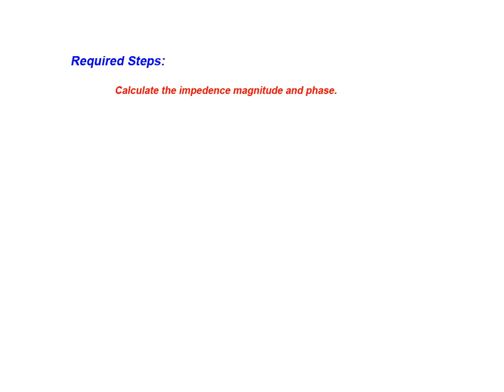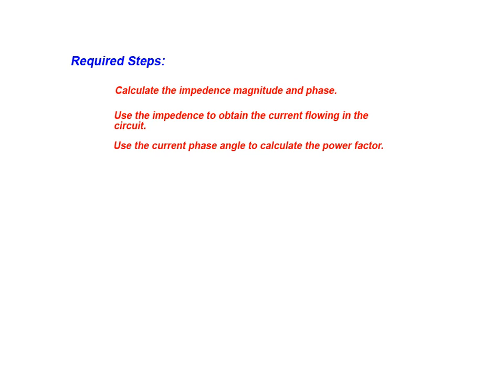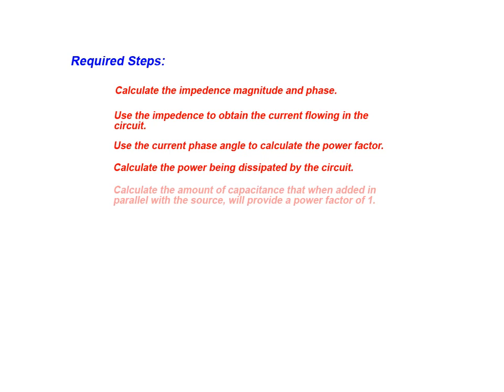To demonstrate the premise outlined in the example, we first calculate the impedance magnitude and phase of the circuit as it is. Next we use the impedance to obtain the current flowing in the circuit. We will then use the current phase angle to calculate the power factor, and use that value along with the applied voltage and current magnitude to calculate the true power being dissipated by the circuit. We will then calculate the amount of capacitance that, when added in parallel with the source, will provide a power factor of one for this circuit.